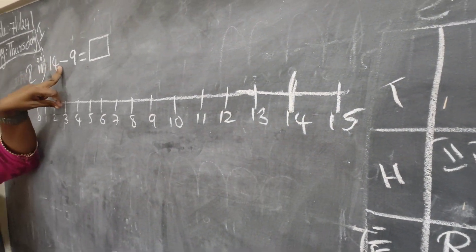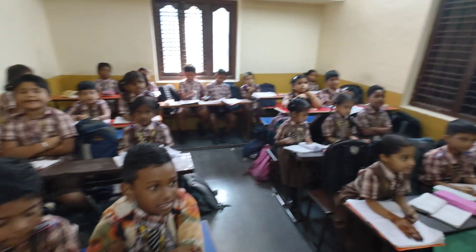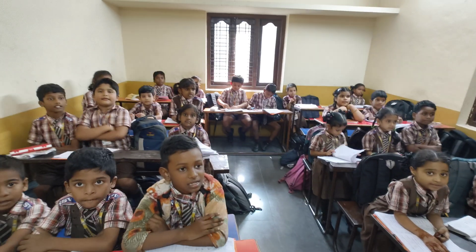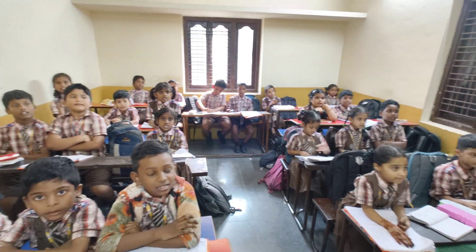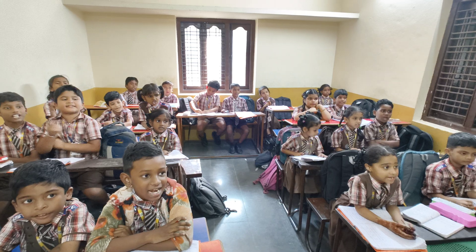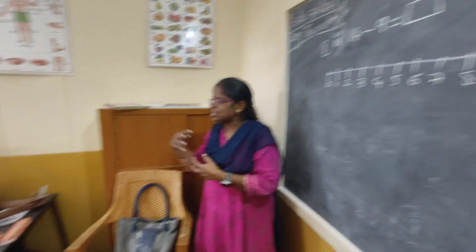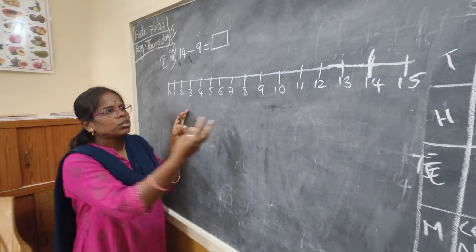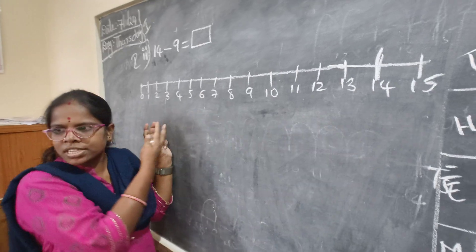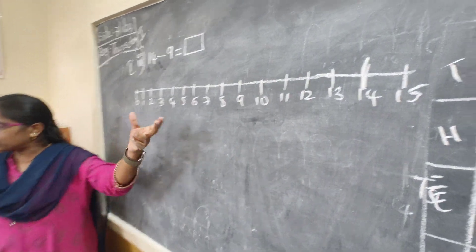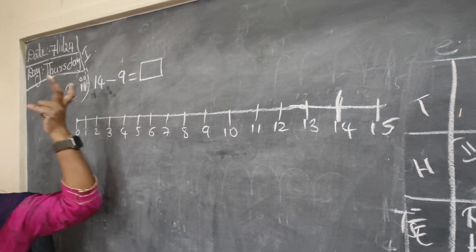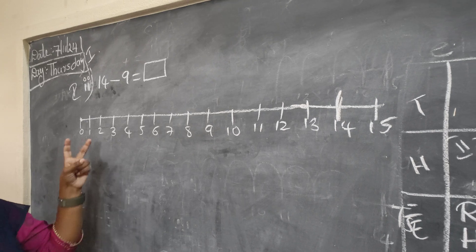Symbol? Minus. What is this symbol? Minus. Minus means? Subtraction. Minus means subtraction — move to the left side on the number line.